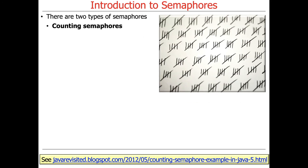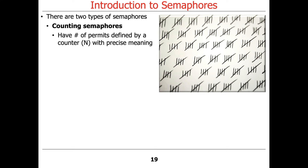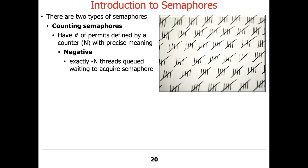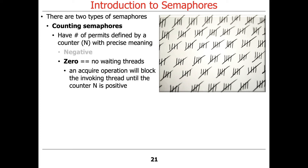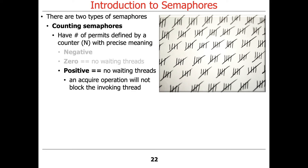There are two types of semaphores. Counting semaphores have a permit number defined by a counter n with a very precise meaning. If the value is negative, there are minus-n threads queued up waiting to acquire the semaphore. If the value is zero, there are no waiting threads, but if you want to acquire the semaphore you'll block, decrementing the count by one. If the value is positive, there are no waiting threads, and acquire operations will not block as long as the count stays positive.